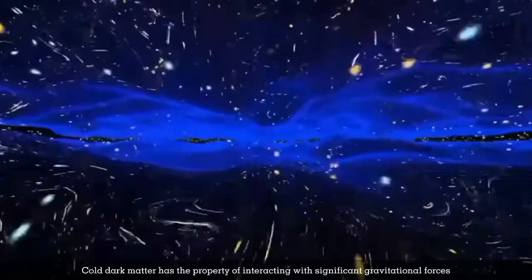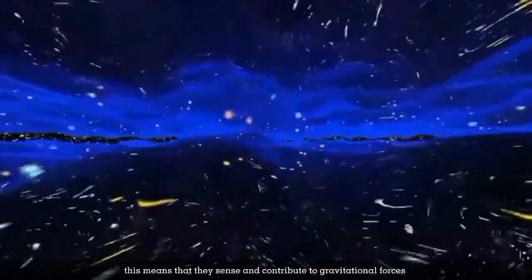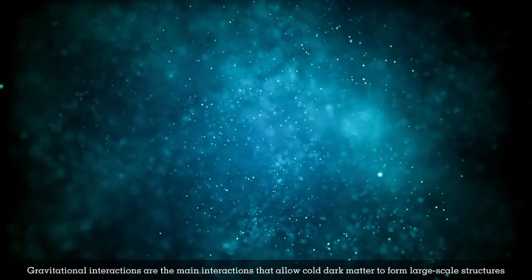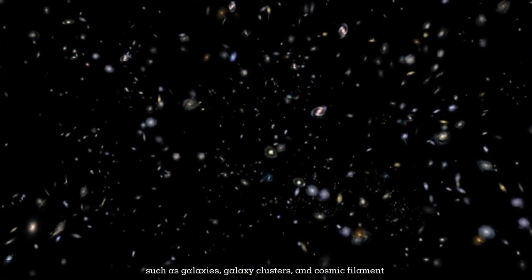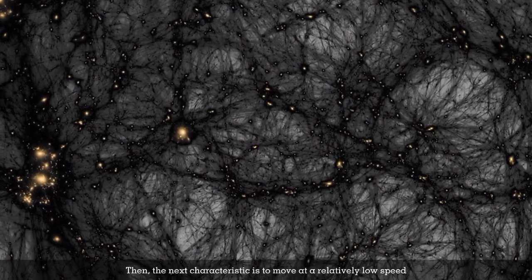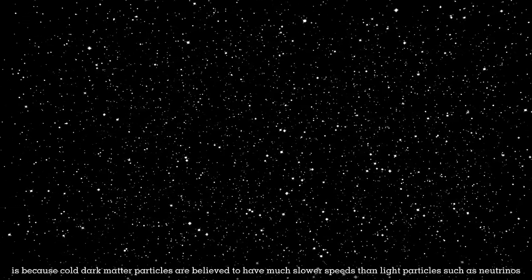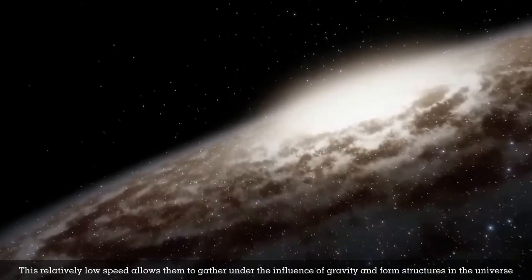Cold dark matter interacts with significant gravitational forces. They sense and contribute to gravitational forces that influence matter's movement and distribution in the universe. Gravitational interactions allow cold dark matter to form large-scale structures like galaxies, galaxy clusters, and cosmic filaments. Cold dark matter particles move at relatively low speeds, much slower than light particles like neutrinos. This low speed allows them to gather under gravity's influence and form cosmic structures.